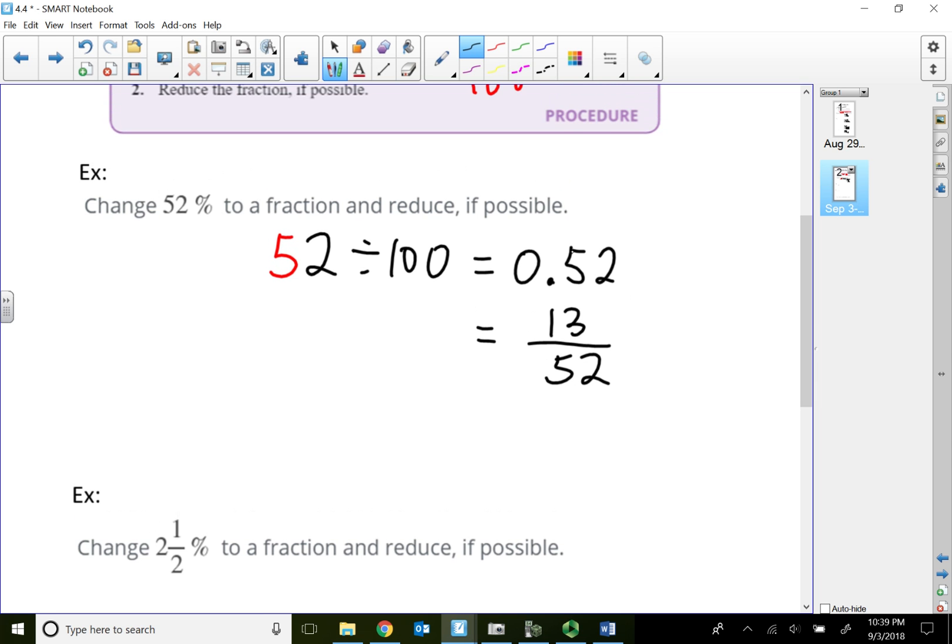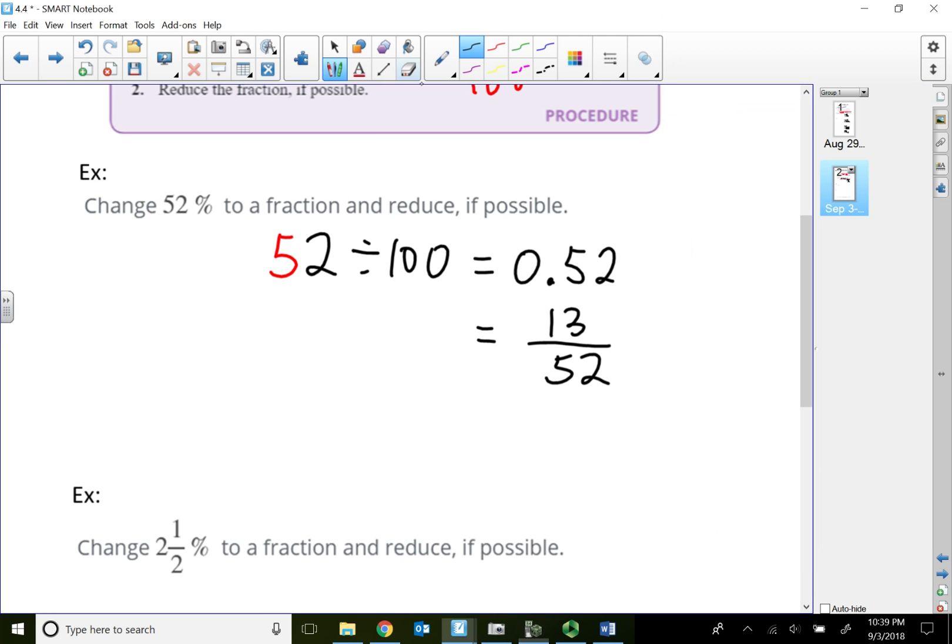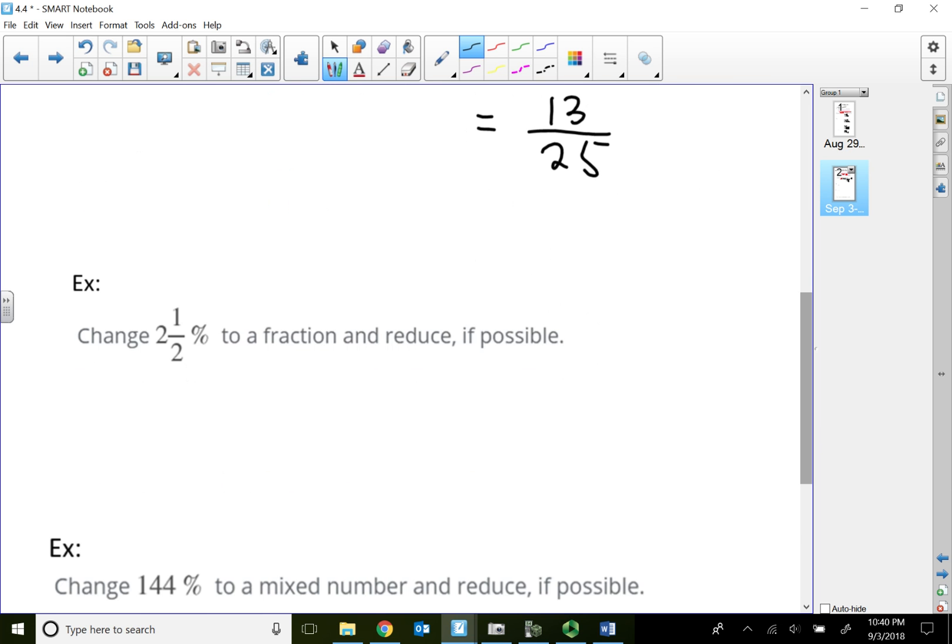Alright. And we've also done this in Module 3, where we can write this as 52 over 100. Right? Because if we read this decimal correctly, this is 52 hundredth. And if I reduce, that will give me... Is that right? 25. I'm so sorry. That will give me 13 over 25. Sorry about that. If you write 52 over 100, we can reduce this by 2. Or I can even reduce it by 4. That will give me 13 over 25.